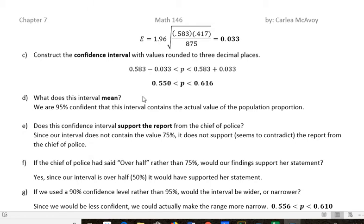What does this interval mean? If you were asked to interpret it, you would say we are 95% confident that this interval contains the actual value of the population proportion. In other words, we're 95% sure that the actual percentage of people who are afraid to go out of their house at night is contained in this interval somewhere—the proportion of people not comfortable walking around at night.